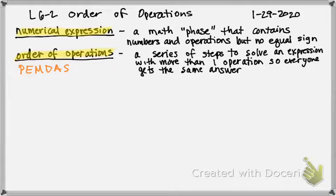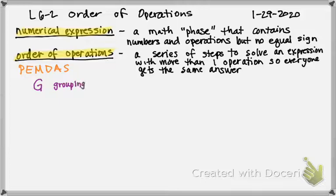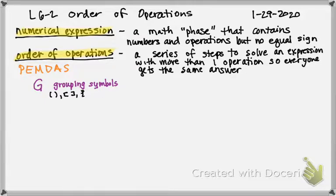The problem is there's more than parentheses that can show up in a math expression or equation. So we're going to change that P and call it G, which stands for grouping symbols. So when I look at a math problem and I see any grouping symbols, I'm going to do that first. The grouping symbols are: parentheses, brackets, braces, and also a fraction bar — which groups everything in the numerator, then groups everything in the denominator, then does the division.